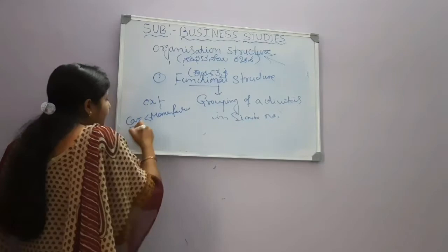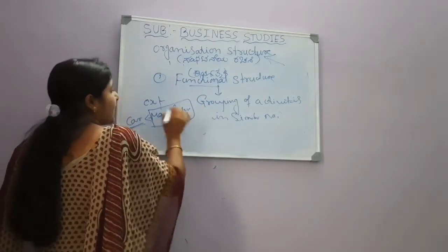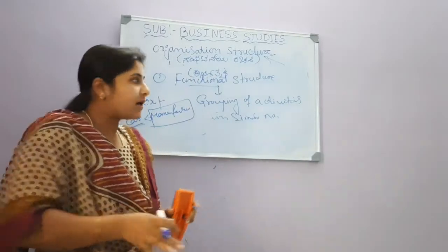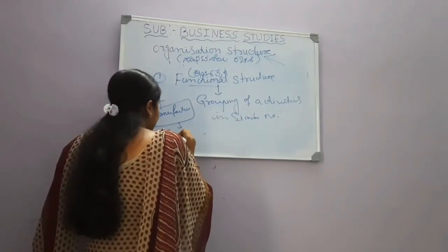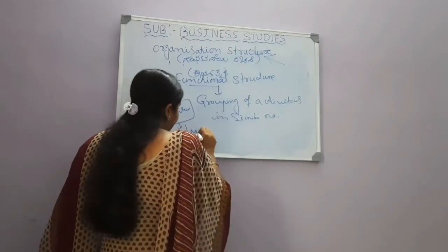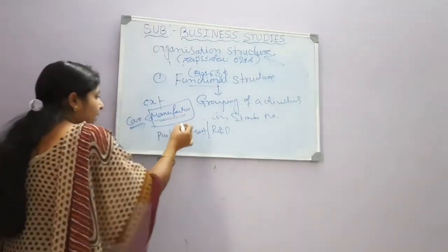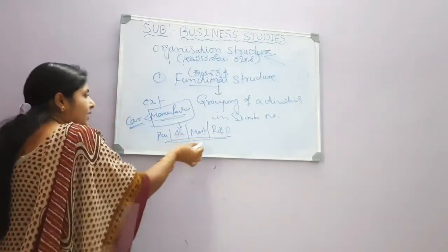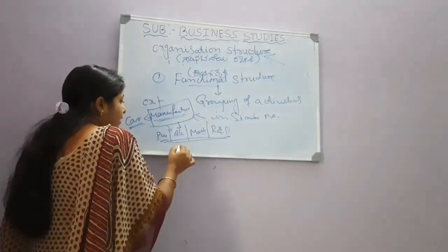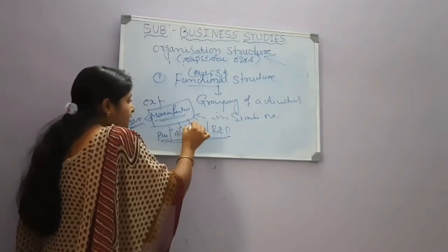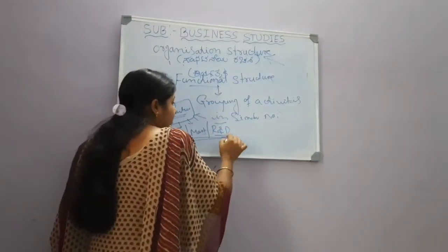For example, take a car manufacturing company. The main activity is manufacturing. In a car manufacturing company, we also have raw material purchase, accounts maintenance, marketing, and research and development activities. Manufacturing is the main activity, but it is not enough alone — so we have separate departments: raw materials, accounts, maintenance, sales, manufacturing, marketing, and business development.